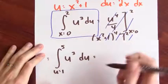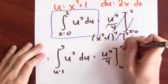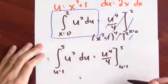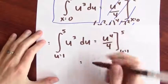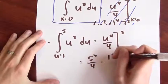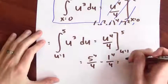Again, I know an antiderivative. It's u to the fourth over 4. And now I'm evaluating it at 5 and 1 in terms of u and taking the difference. So when I plug in 5, I just get 5 to the fourth over 4. And when I plug in 1, I just get 1 to the fourth over 4.